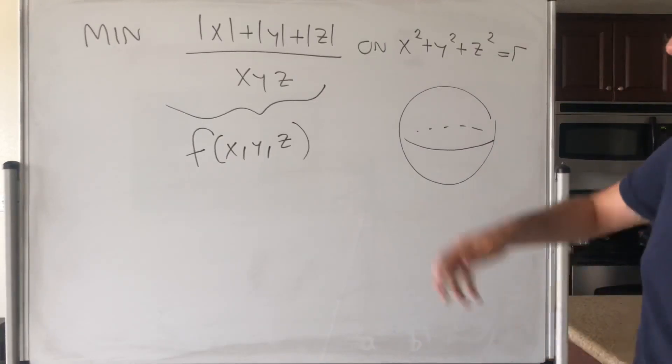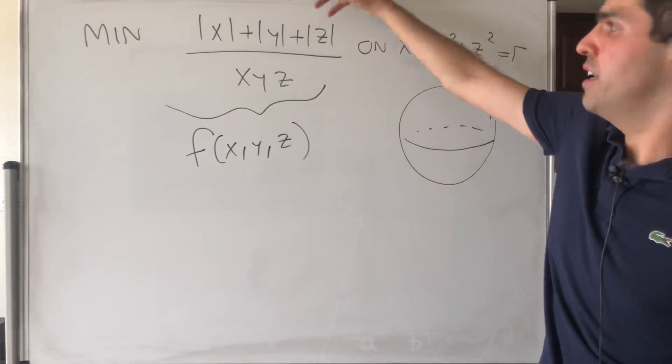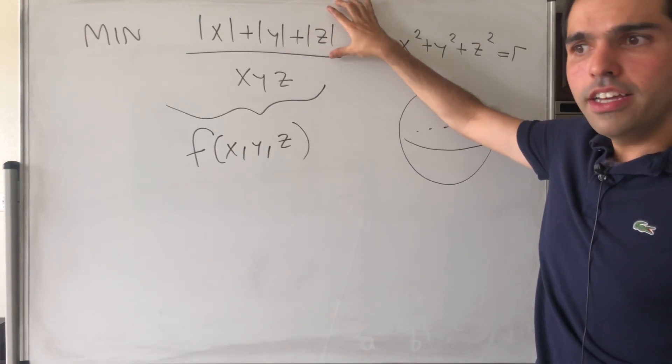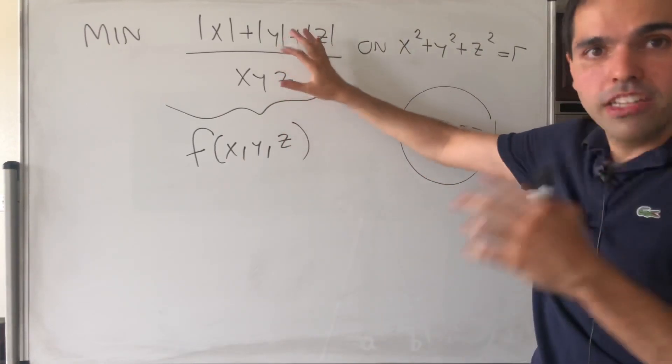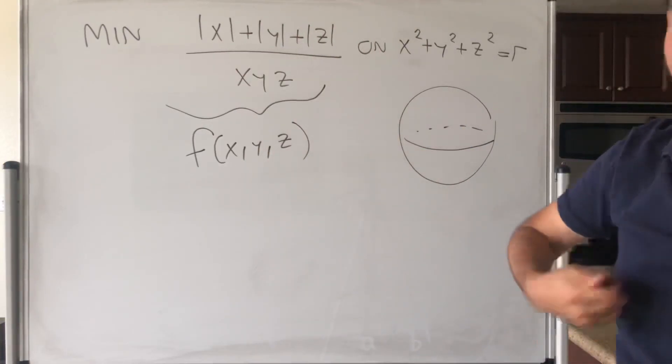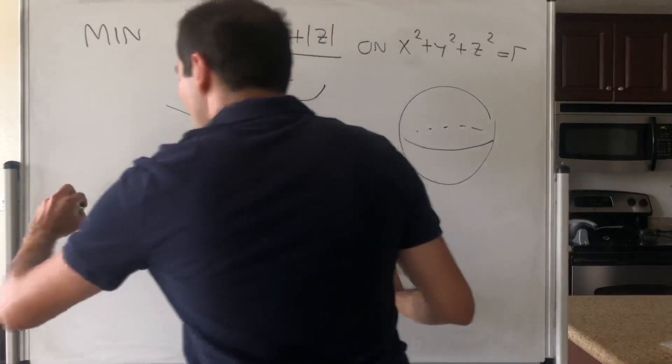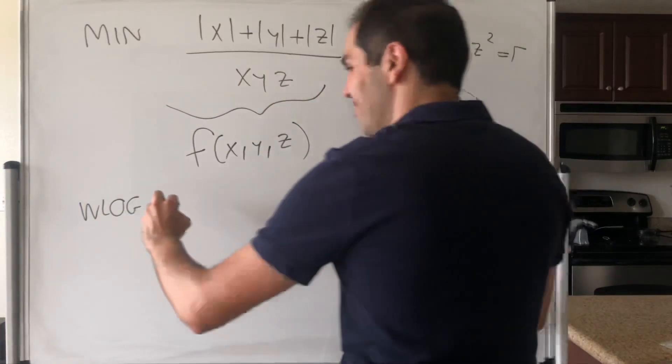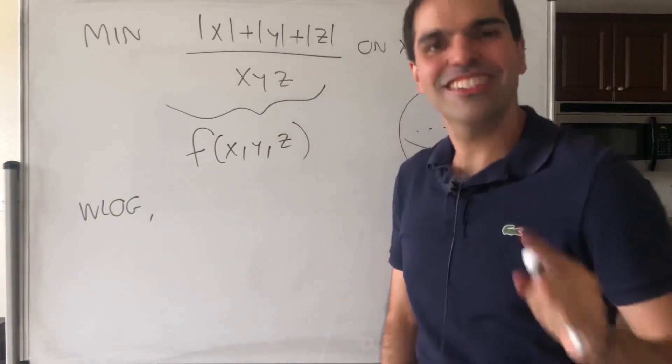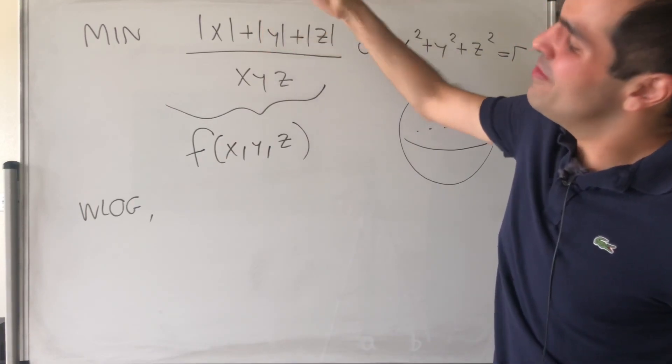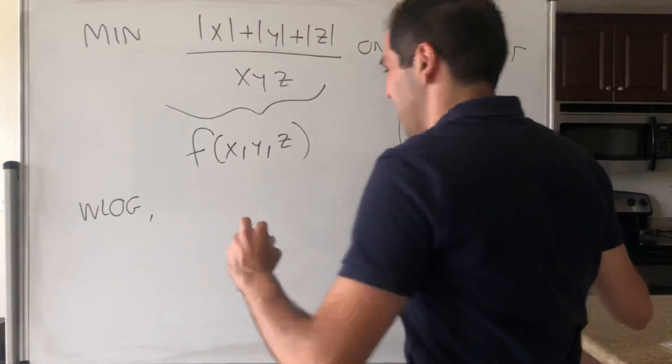And in particular note, in order to minimize this, because the numerator is positive, it's best to look for x, y, z that are negative, because it just makes the function negative, which is exactly what we want. Without loss of generality, by symmetry, we can just assume all of them are negative.